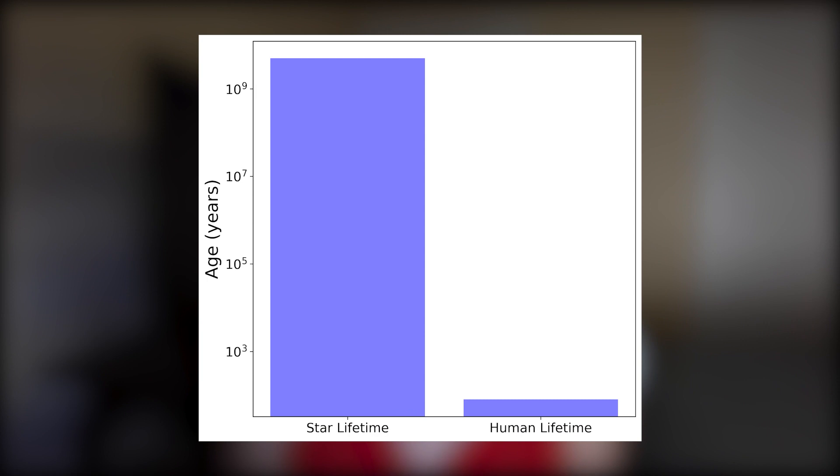Just to put this into numbers for you, a star's lifetime can be anywhere from billions of years to many billions of years, while a human lifetime is only on average roughly 80 years. For most objects studied in astronomy, we can't just point our telescope at the same object for the whole 80 years or so of a human lifetime and expect to see many changes, because the timescales over which the universe evolves are very large, and so a mere 80 years won't produce much change.